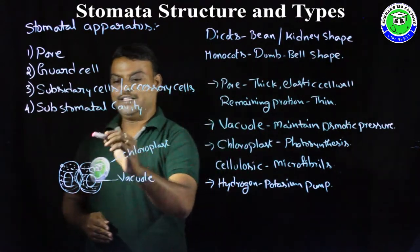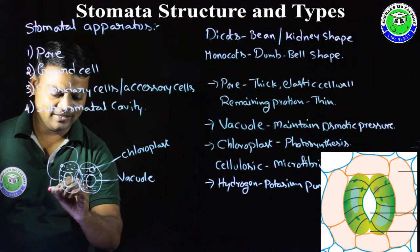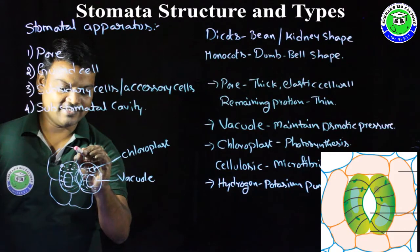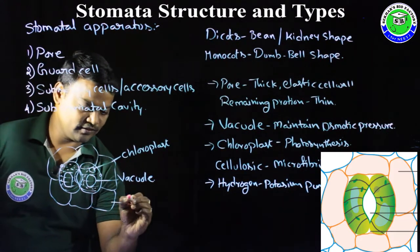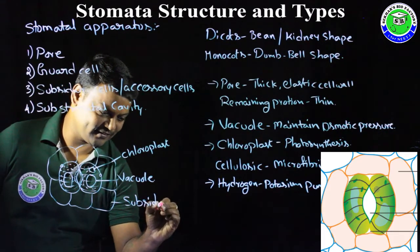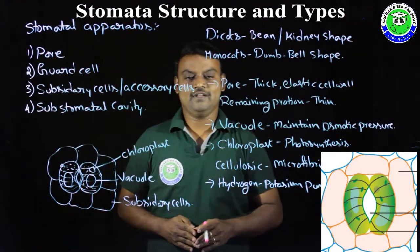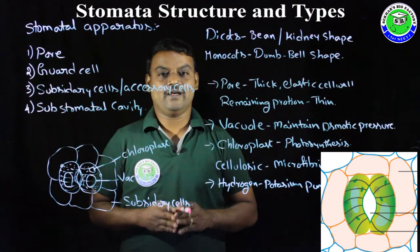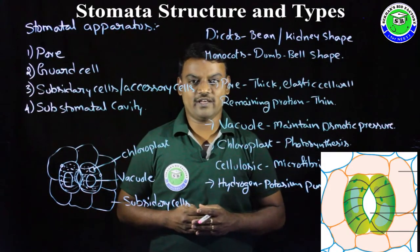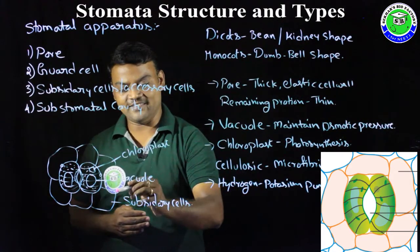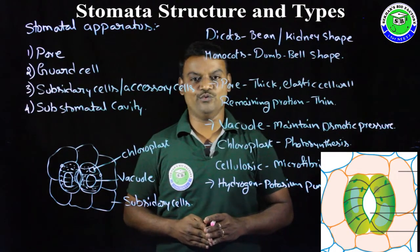Guard cells are surrounded by some epidermal cells called subsidiary cells or accessory cells. The main function of subsidiary cells is that they contain water, and based on concentration gradient, water can be transported from subsidiary cells to guard cells and from guard cells to subsidiary cells during stomata opening and closing.